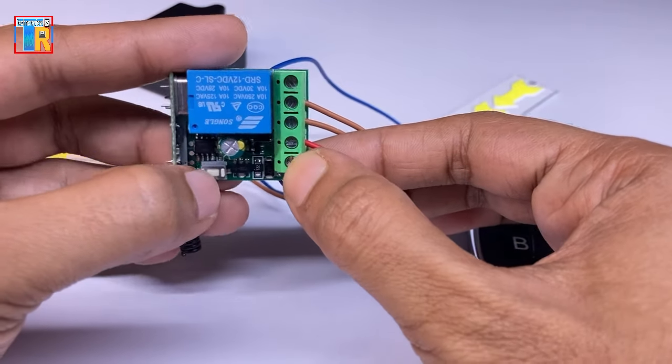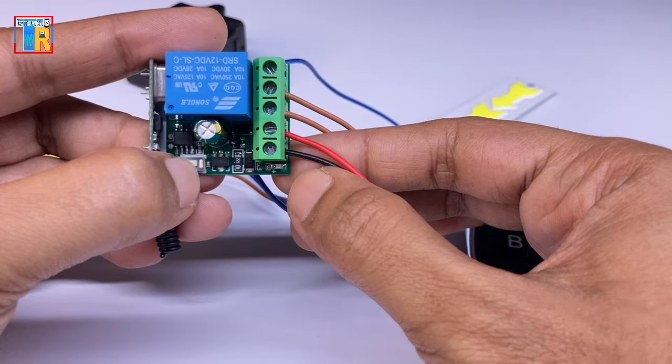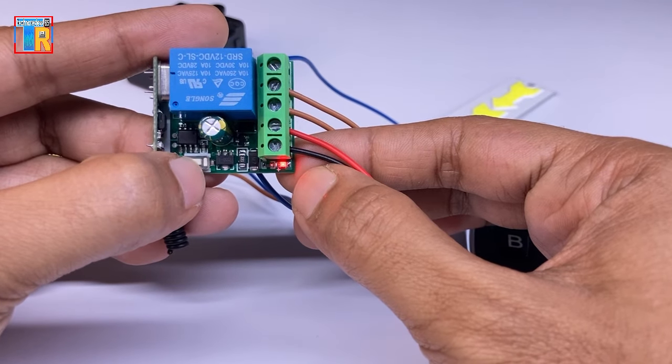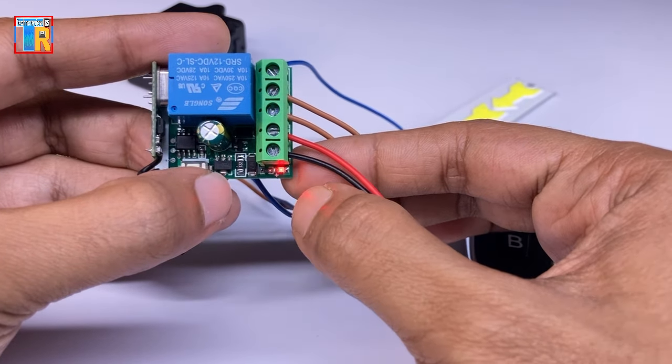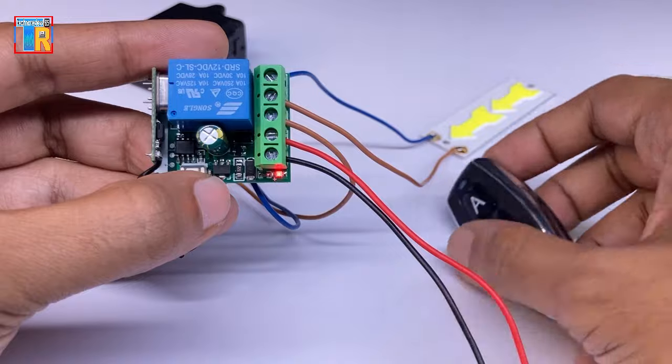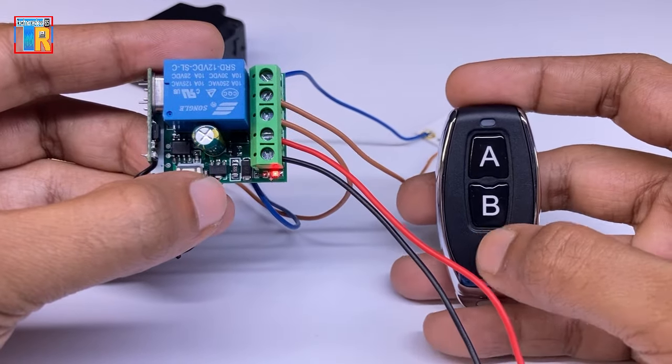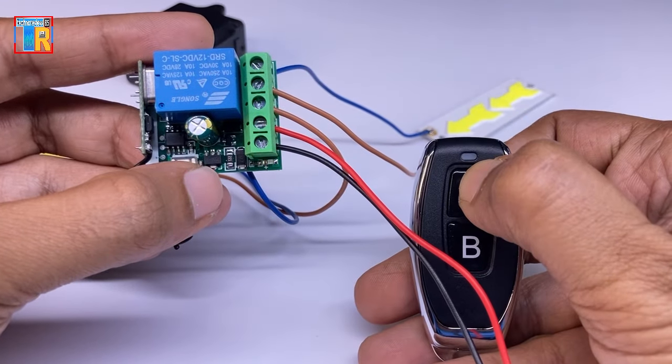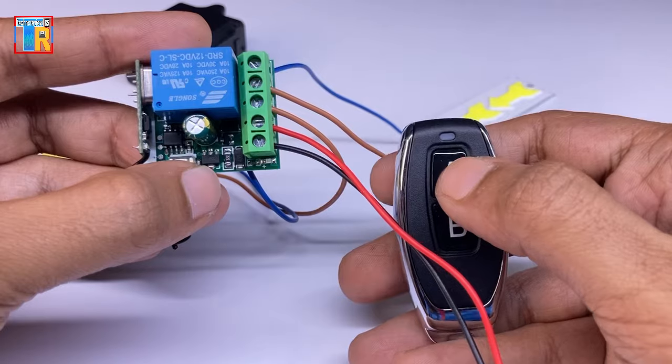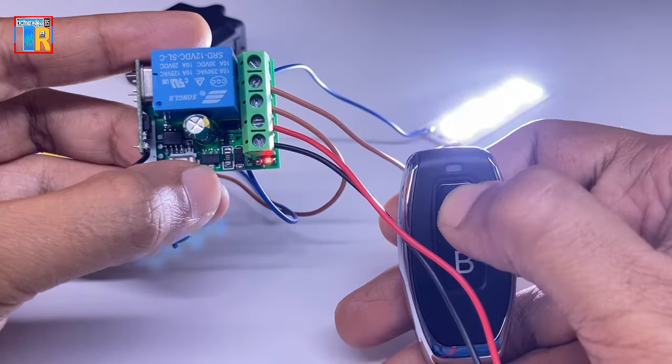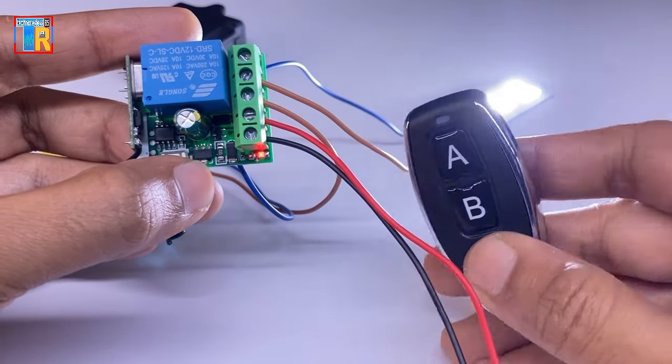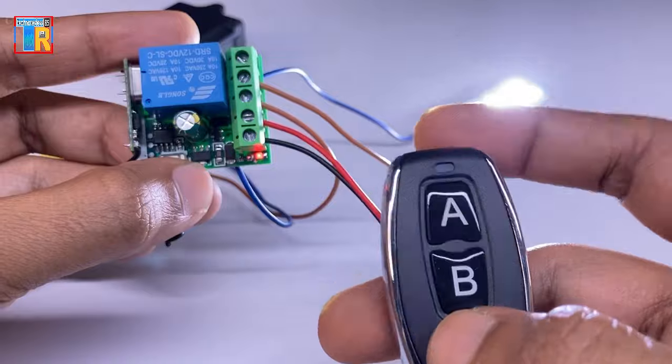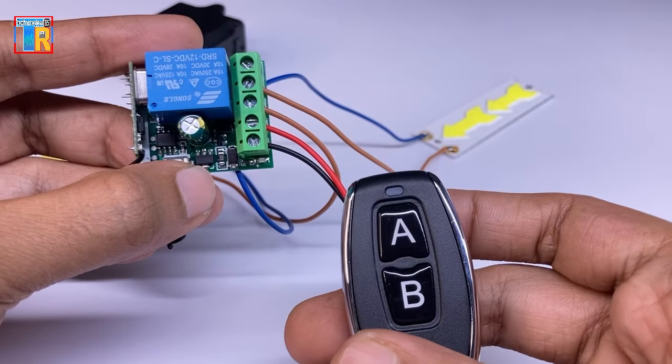The second mode is toggle mode. To use this mode you need to press the small switch twice and then press either switch A or B on the remote. In my case I pressed A. Now pressing A once turns the relay on and pressing it again turns it off.